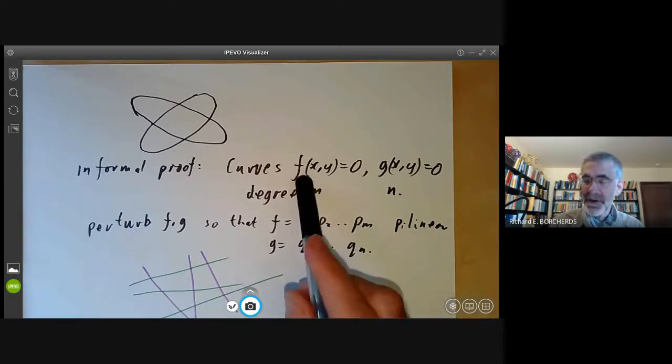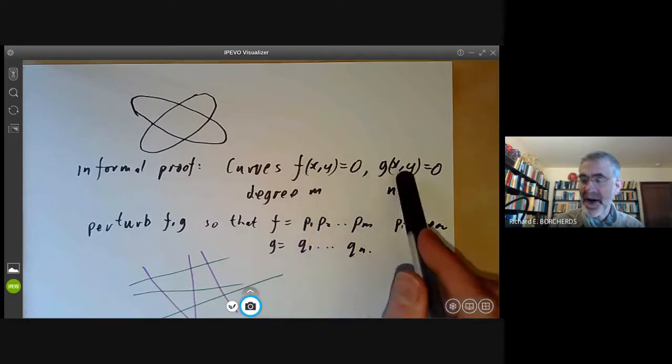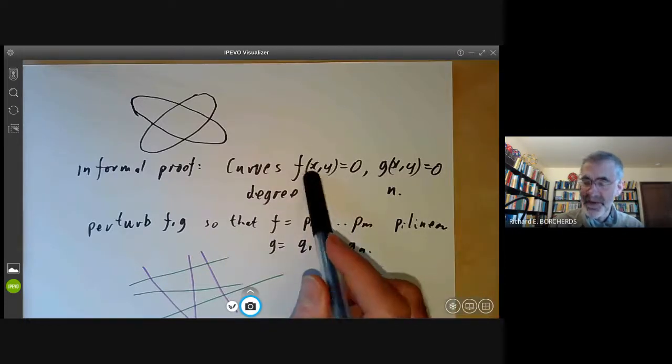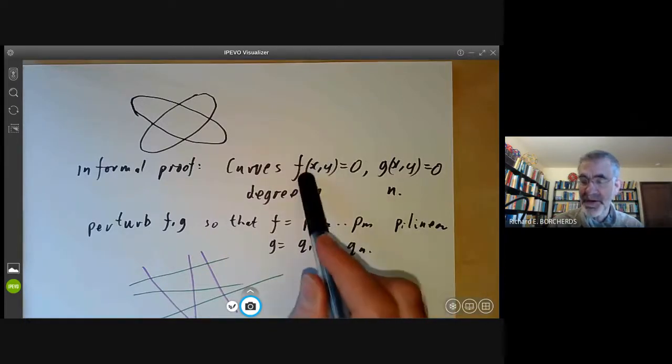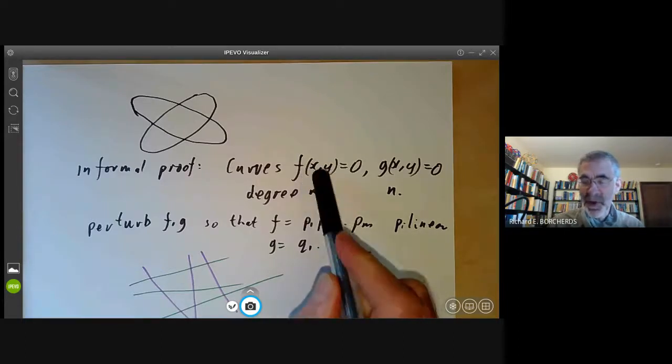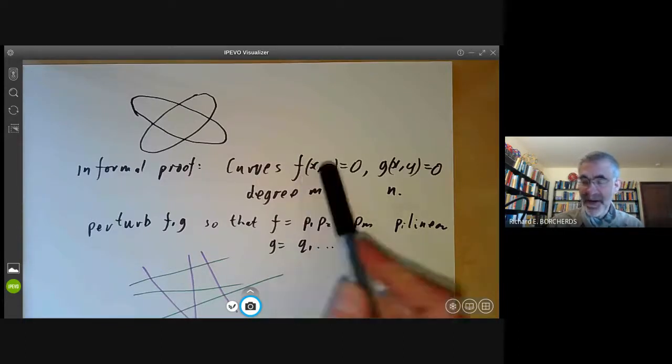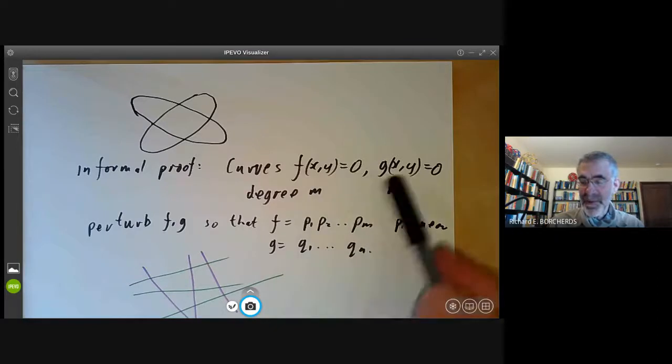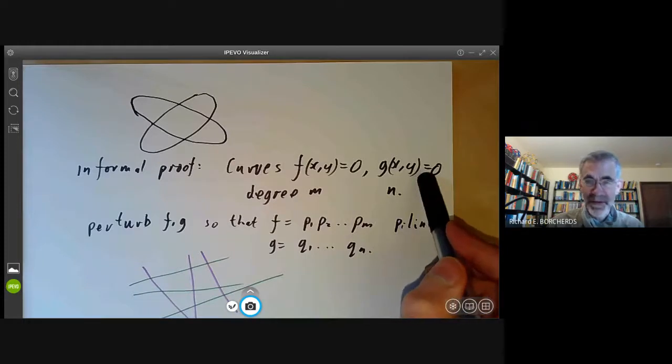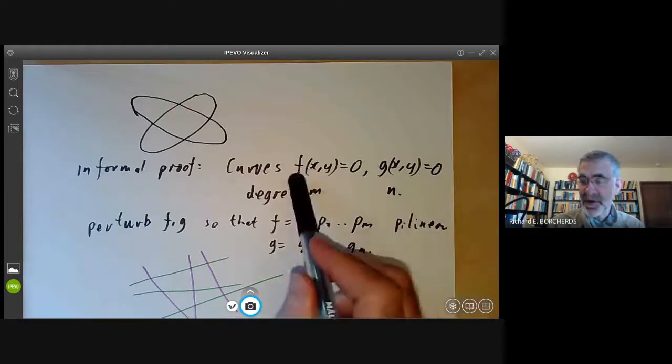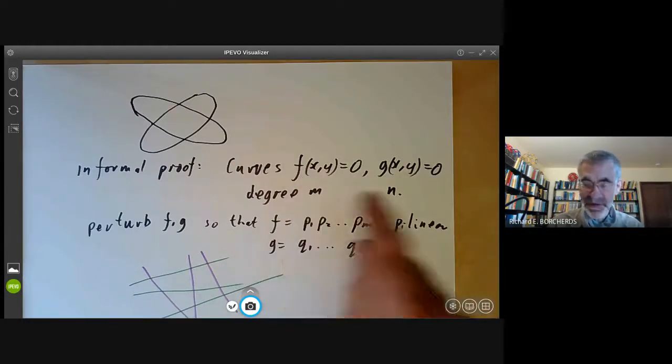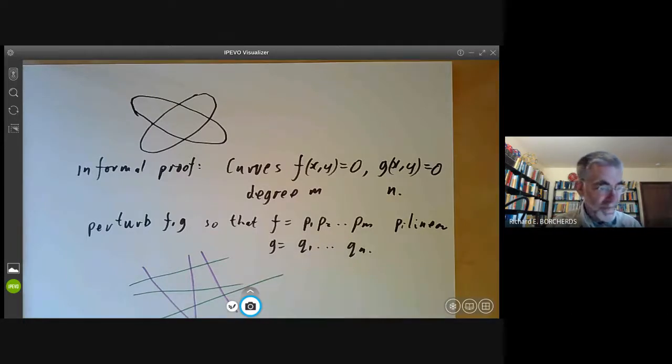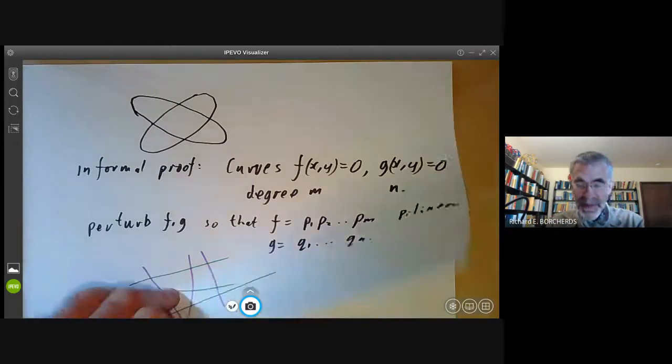For instance, if we worked in n dimensions and had n hypersurfaces, then you could perturb each hypersurface so it was a union of hyperplanes and you get the analog of Bezout's theorem in n dimensions, which says that if you take an intersection of hypersurfaces of the right number, the total number of intersection points is the product of their degrees. Anyway, that's Bezout's theorem.